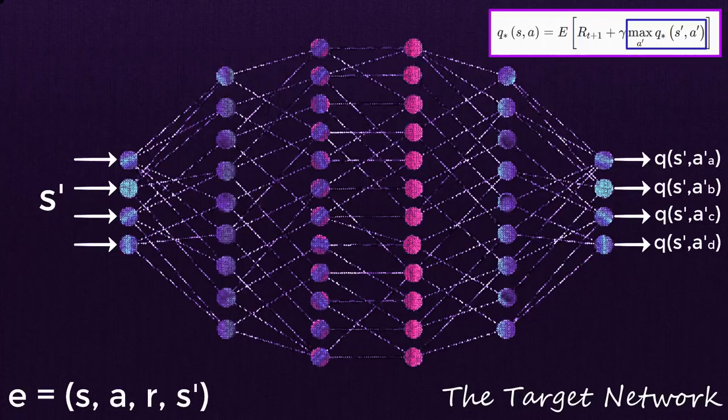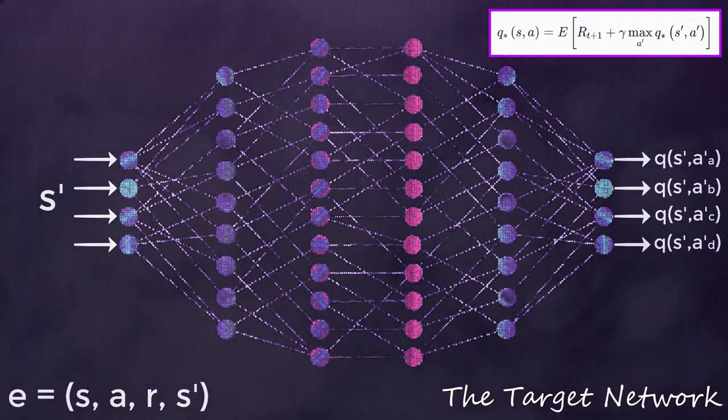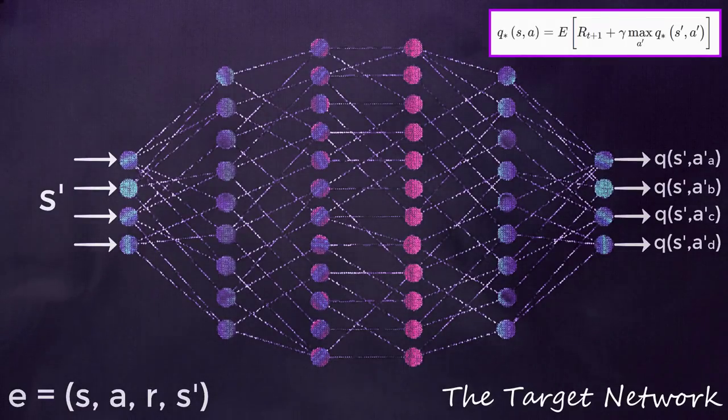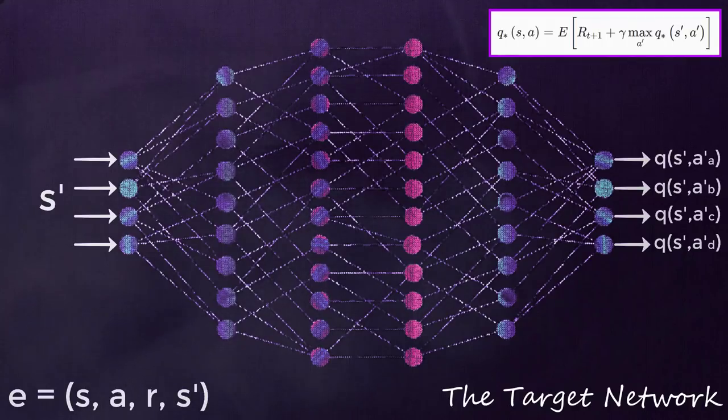As it turns out, this removes much of the instability introduced by using only one network to calculate both the queue values as well as the target queue values. We now have something fixed, i.e. fixed queue targets, that we want our policy network to approximate, so we no longer have the dog chasing its own tail problem. As mentioned though, these values don't stay completely fixed the entire time. After X amount of time steps, we'll update the weights in the target network with the weights from our policy network, which will in turn update the target queue values with respect to what it's learned over those past time steps. This will cause the policy network to start to approximate the updated targets.